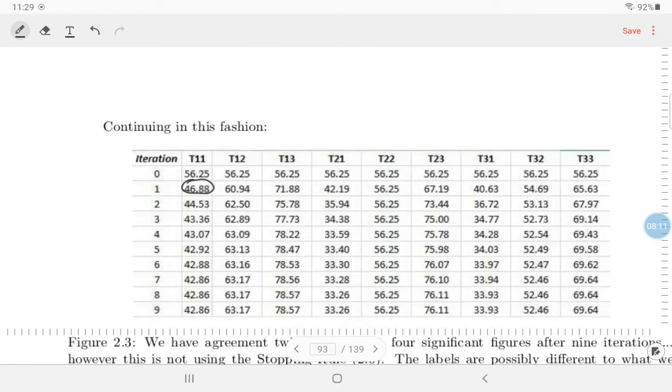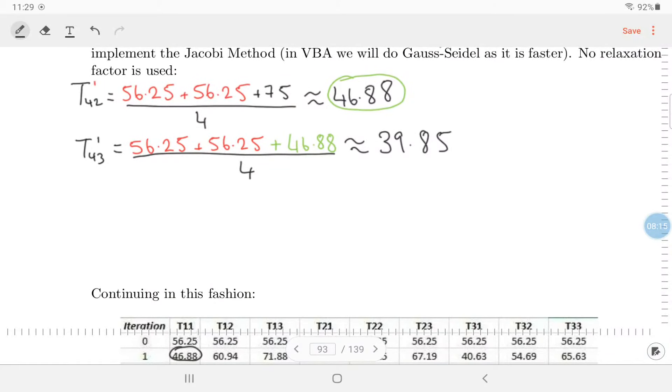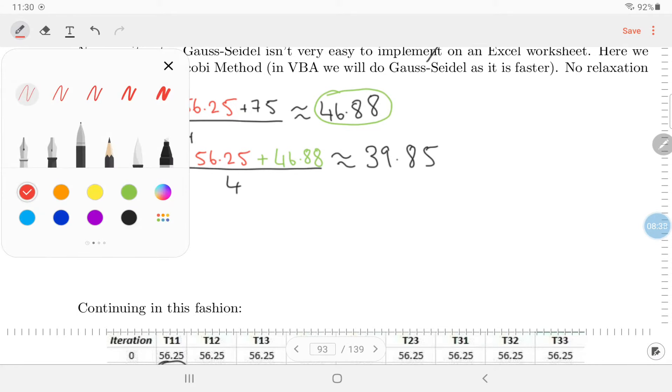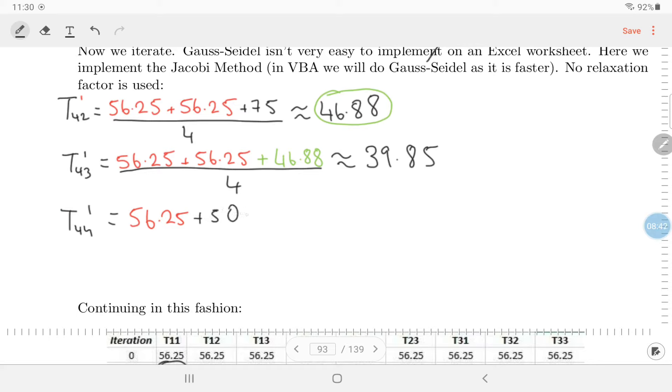And the Gauss-Seidel method would use the very latest available T42. So if you use the previous one, 56.25, that would be the Jacobi method. But if you use the very, very latest available one, that's Gauss-Seidel. So we'll put this into the calculator. 56.25 by two plus 46.88 equals divided by four. I'm getting 39.85. And hopefully that is down here somewhere. No, because this is possibly, well, you see, it depends on what order you actually calculate them in. So we won't worry so much what's actually going on down there. So the next one then is T44.